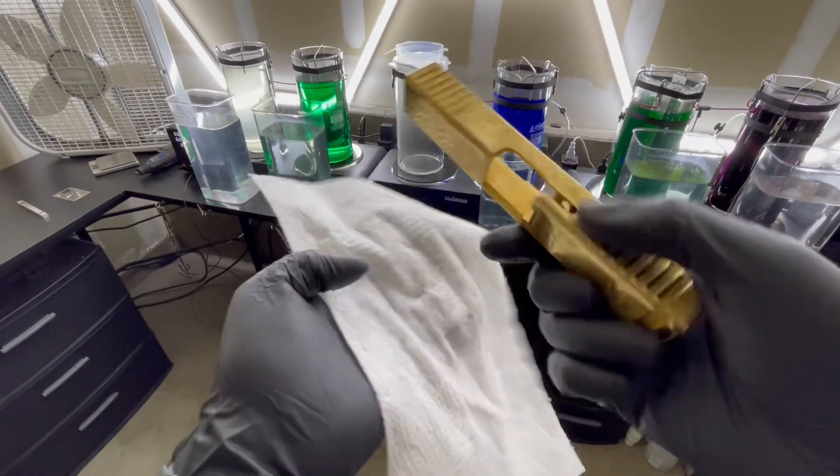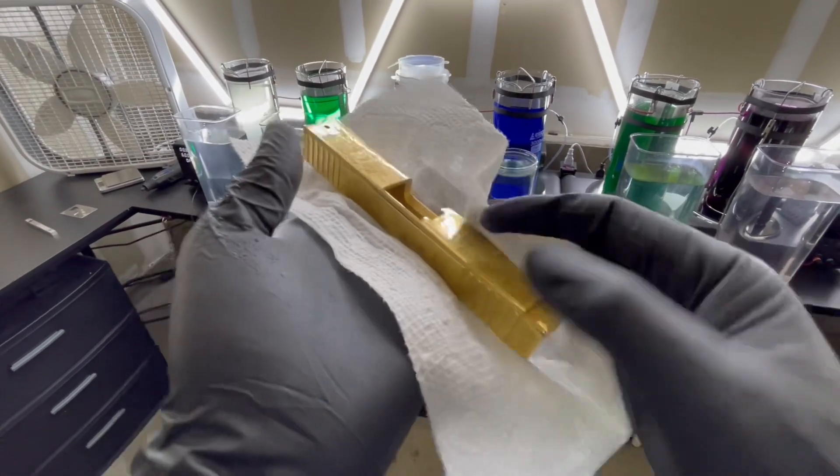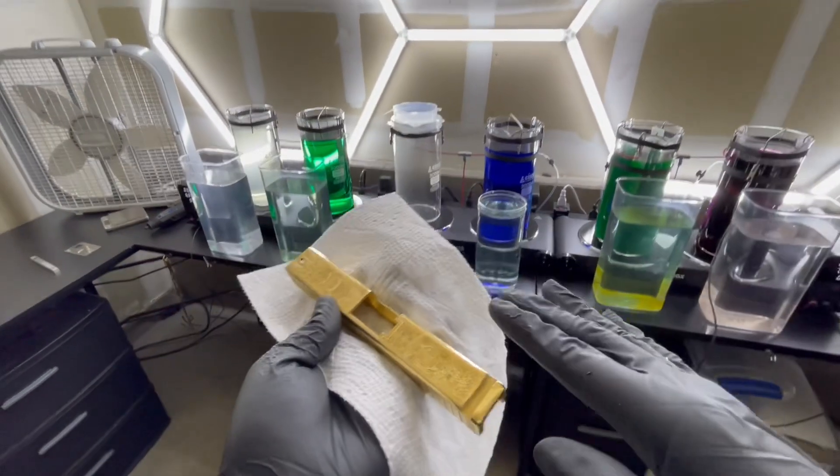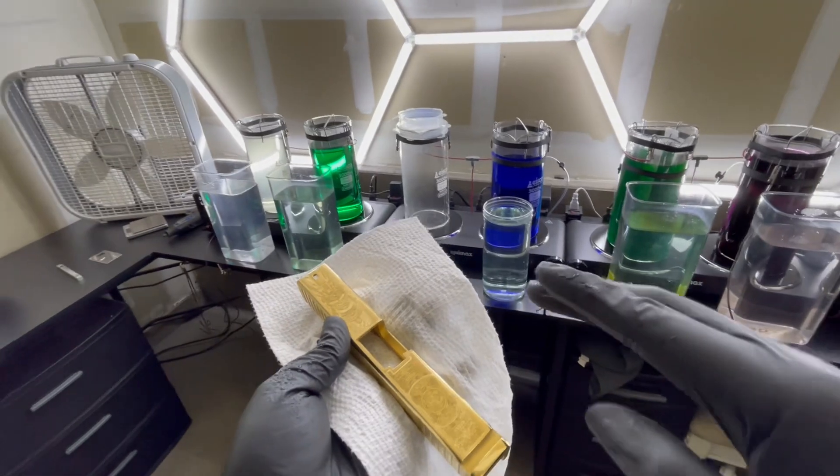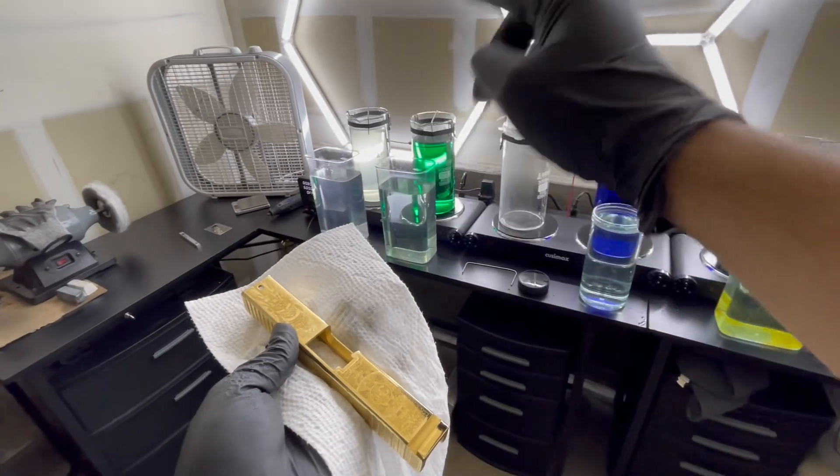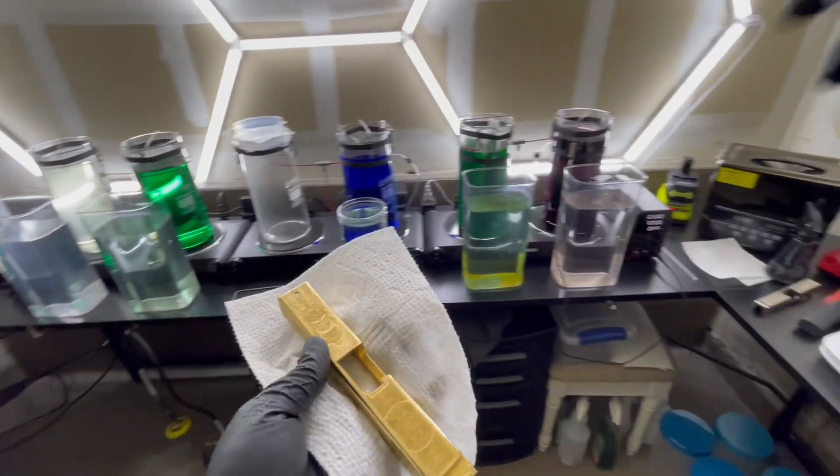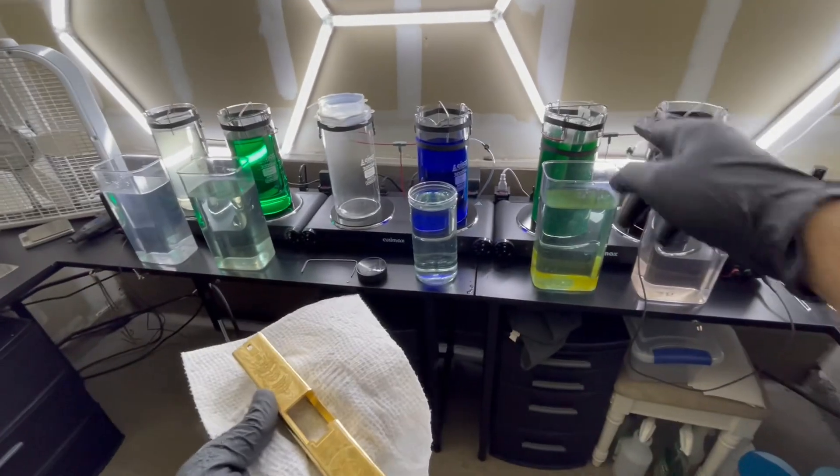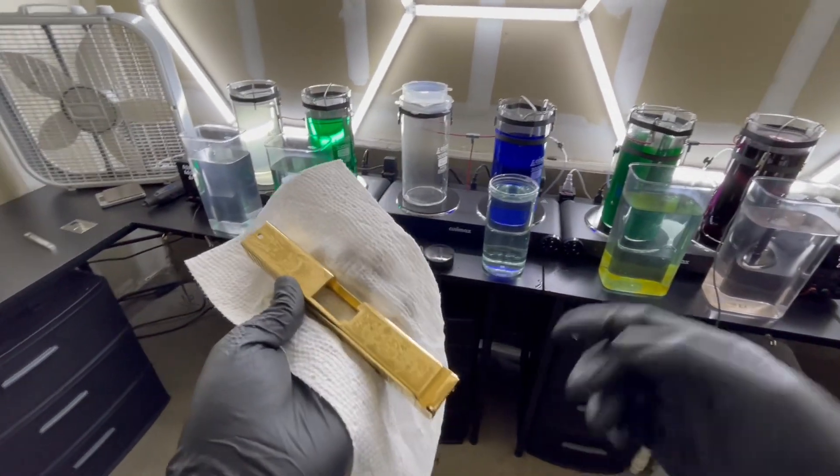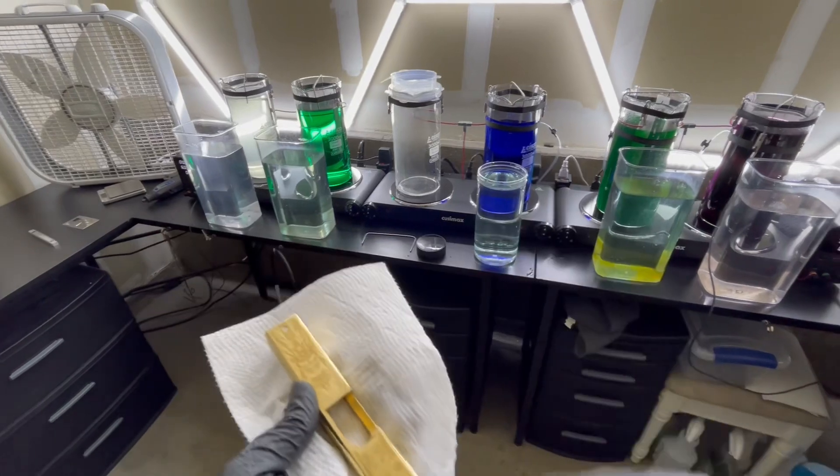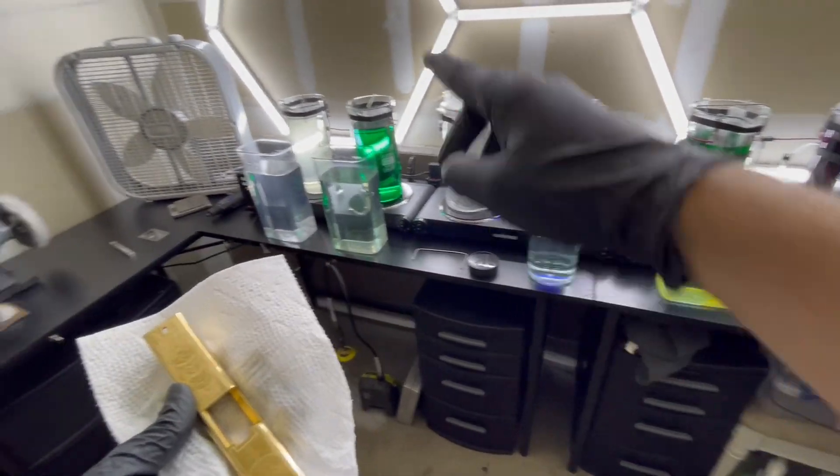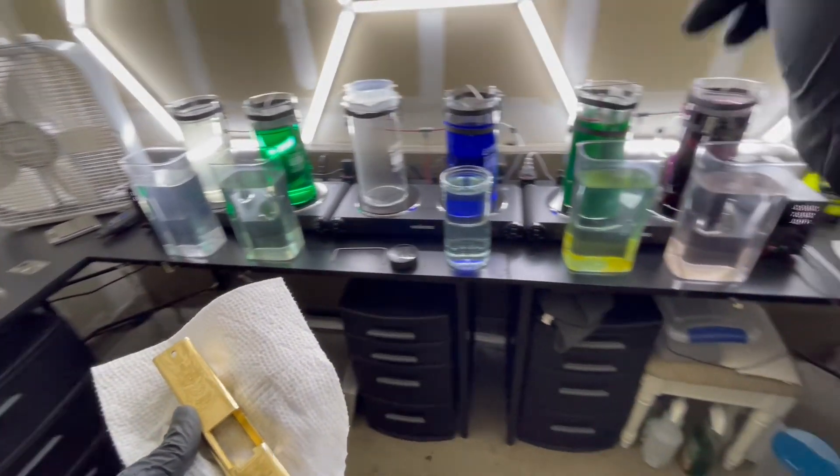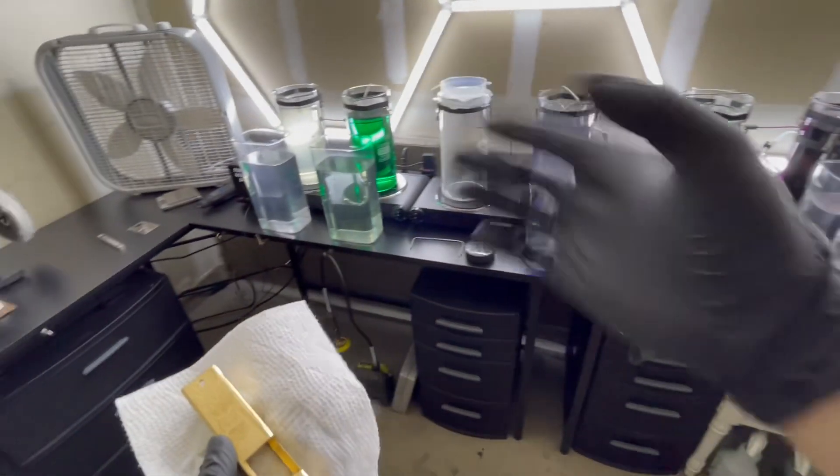That way I would also be able to get the same result on stainless steel by just going from electric cleaner, woods nickel, straight into the gold. I would have had to add nickel. I've seen a lot of people run a four beaker setup and they'll use the electric cleaner, woods nickel, and then nickel.